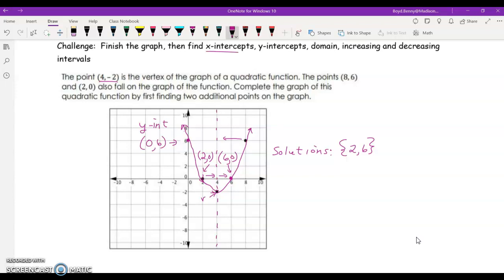Let's see, what else do we need to find? x-intercepts, y-intercepts, domain. The domain. Notice that this does not end. There is no limit to the x-direction. So, the domain is all real numbers.